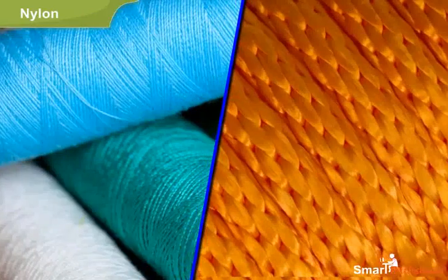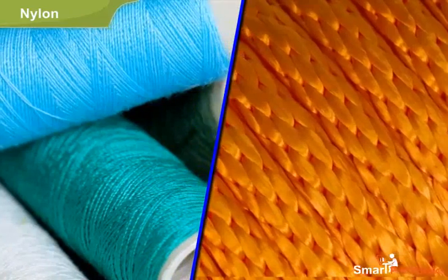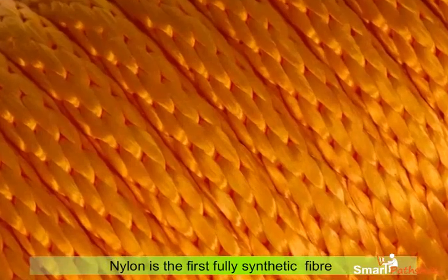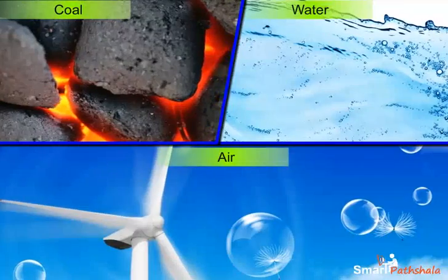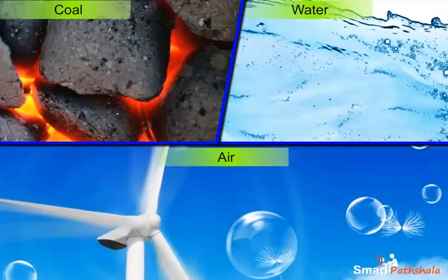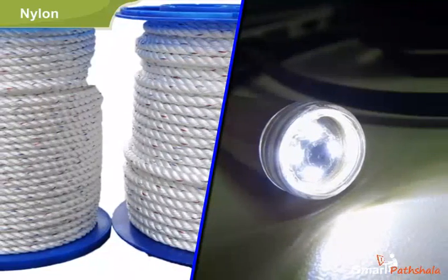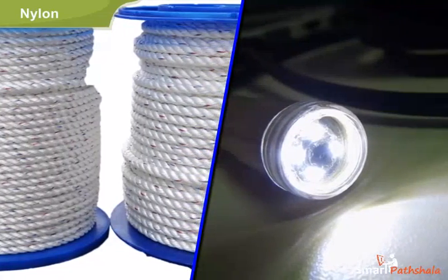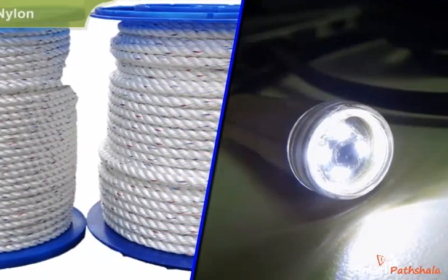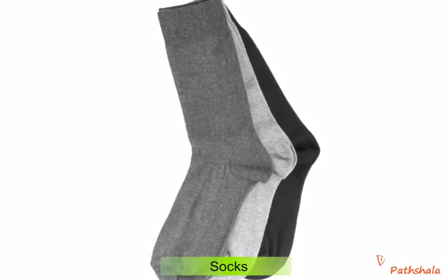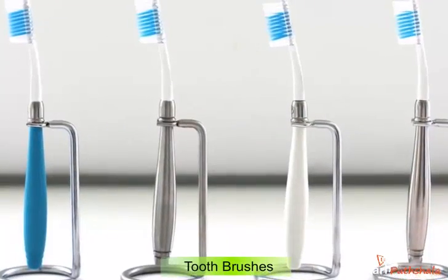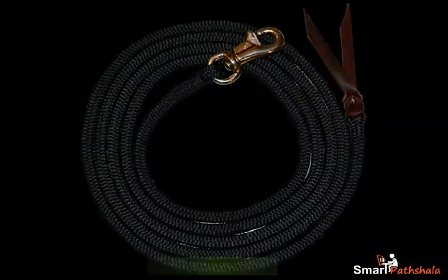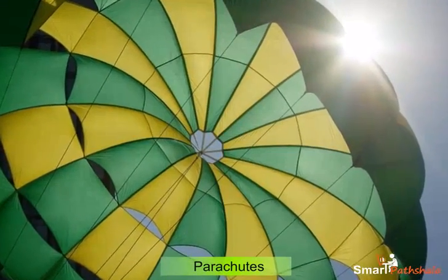Now let us learn about another synthetic fiber called Nylon. Nylon is the first fully synthetic fiber prepared from coal, water and air. Nylon is very popular due to its strength, elasticity and lightness. Most common examples of nylon in daily routine are socks, toothbrushes, ropes etc. Nylon is also used in preparing parachutes.